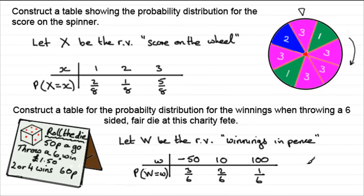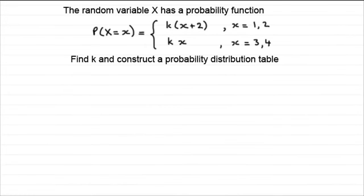Anyway, let's move on to another typical question that you can get. Now, in this example, what we've got is a random variable X has a probability function. The probability that our random variable X equals any observed value is equal to k times all of x plus two, when x is one or two, and kx when x is three or four. And what we've got to do is find out what that constant k is, and also construct a probability distribution table. So this kind of question appears in a different style.